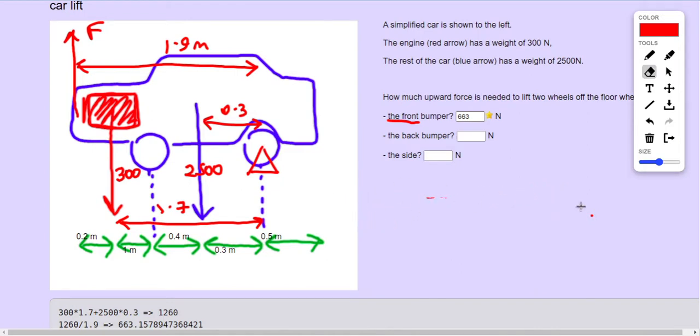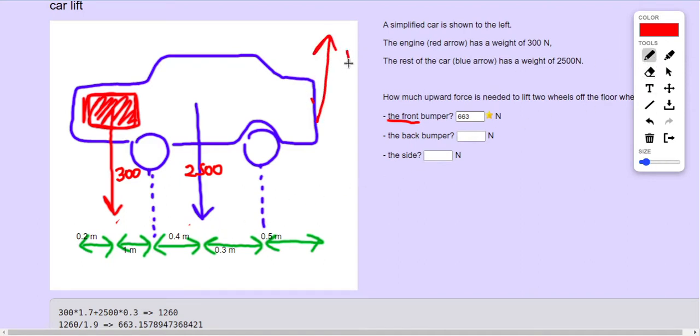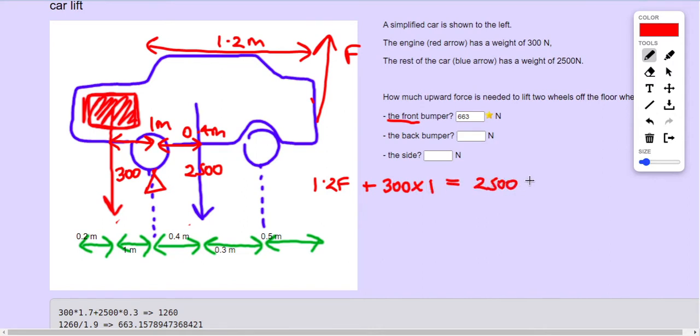Okay, the next one is similar, but now it moves to looking from the back of the car and it ends up on the front wheels. So this time the 300 is actually in the same rotational direction as F, they're both acting clockwise, so 1.2F plus 300 times 1 equals 2,500 times 0.4.